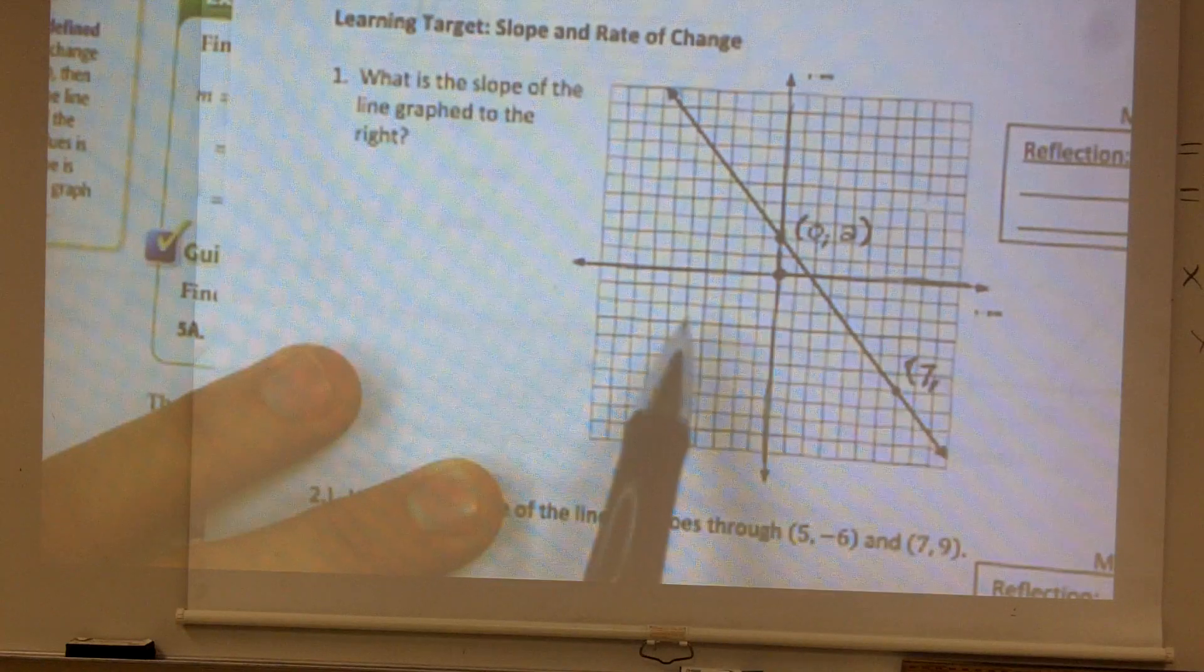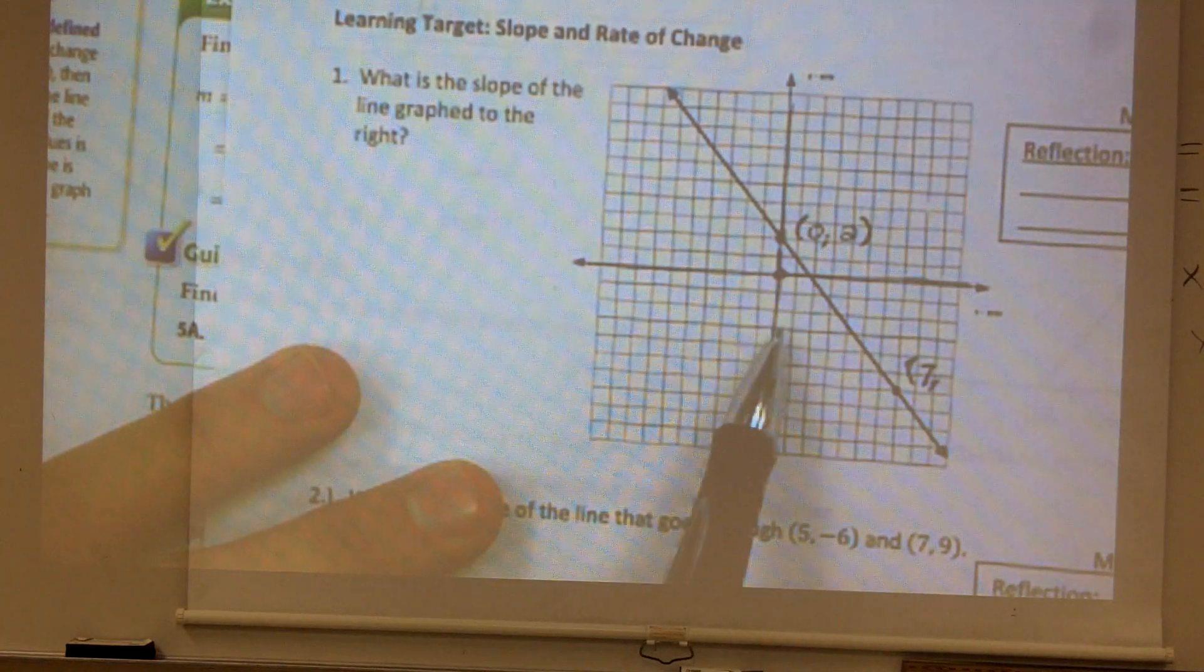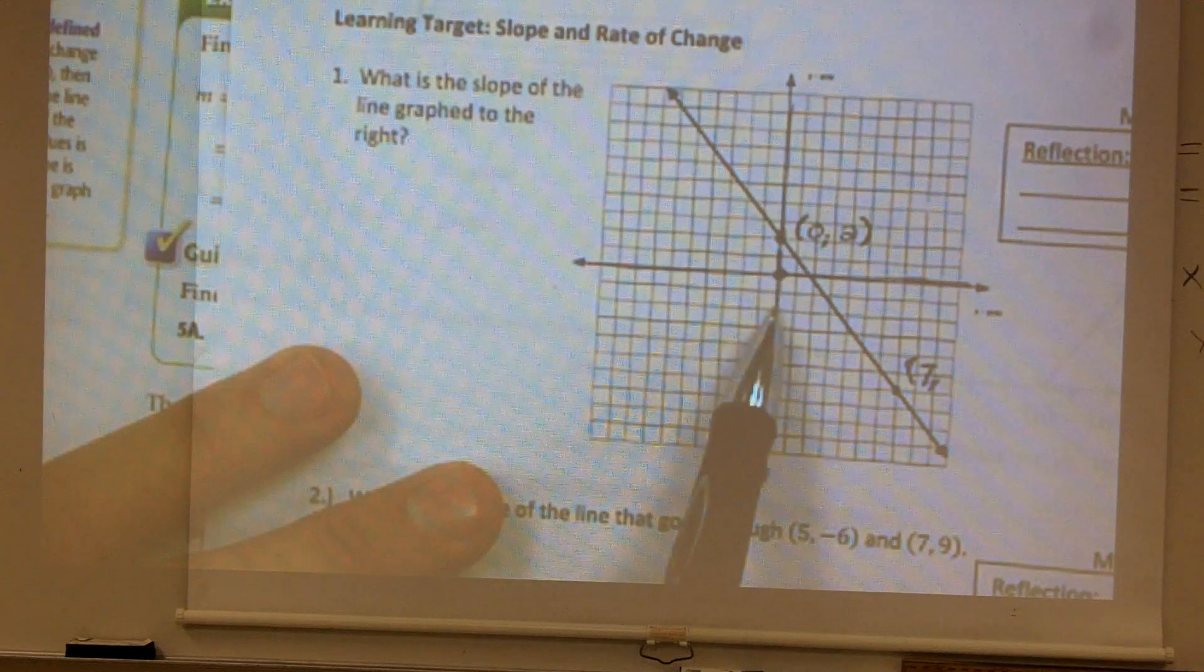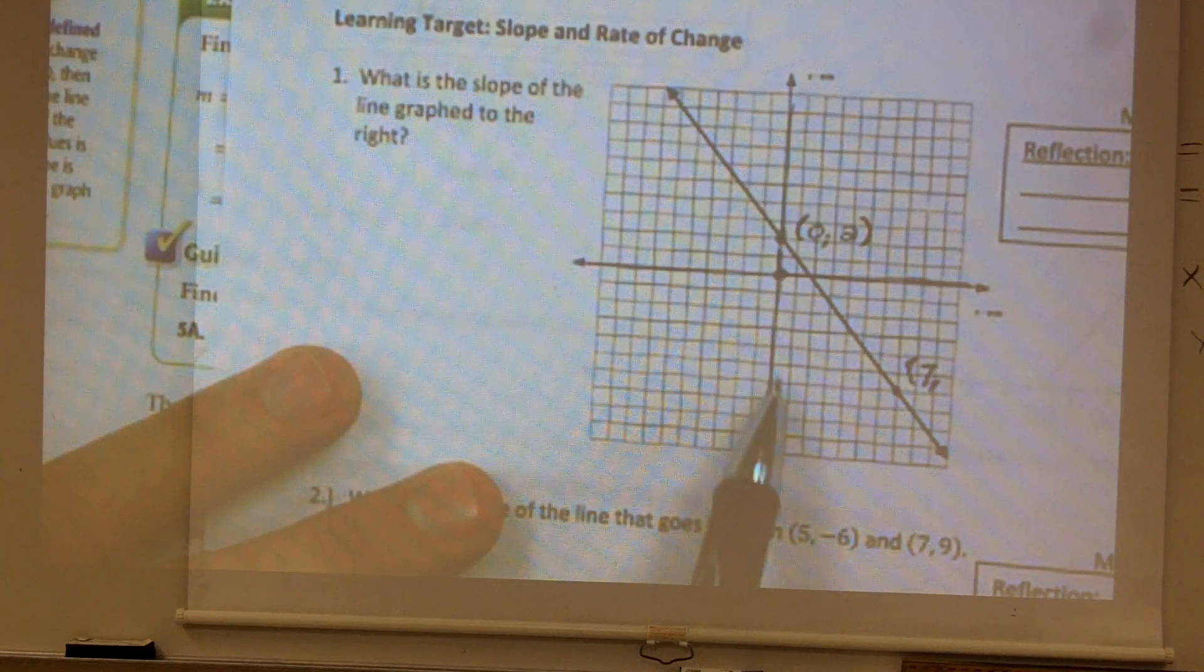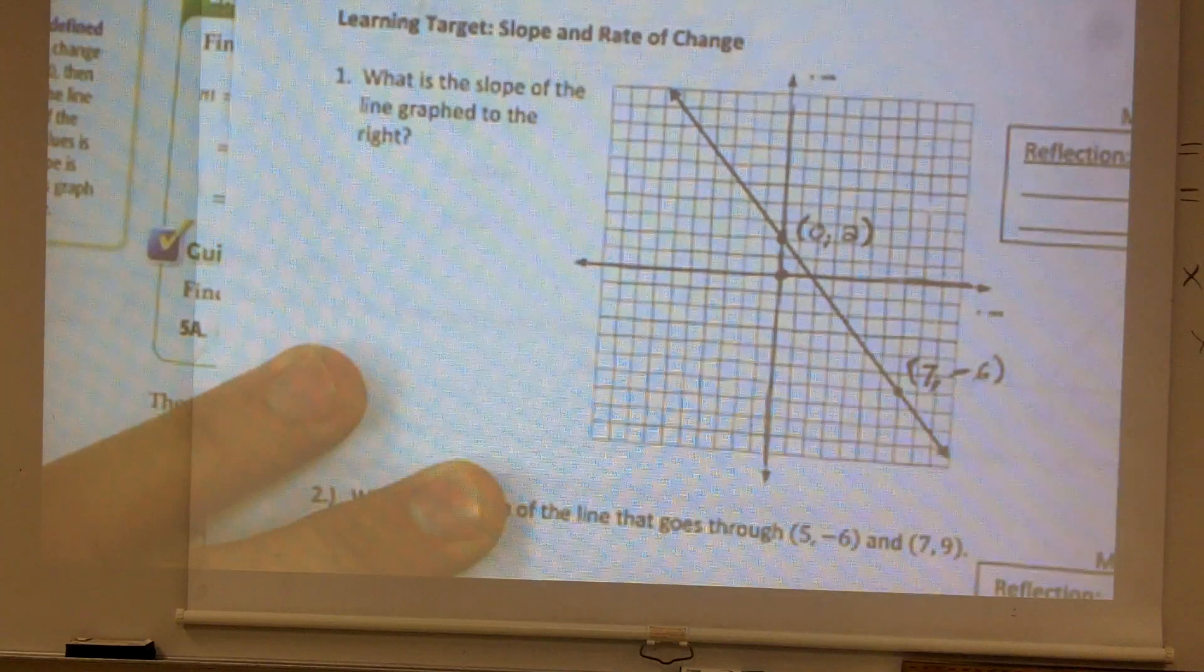And then the y value is how far down do I have to go from my origin, which is 1, 2, 3, 4, 5, 6. So since I'm going down, I'm going to make it a negative 6.